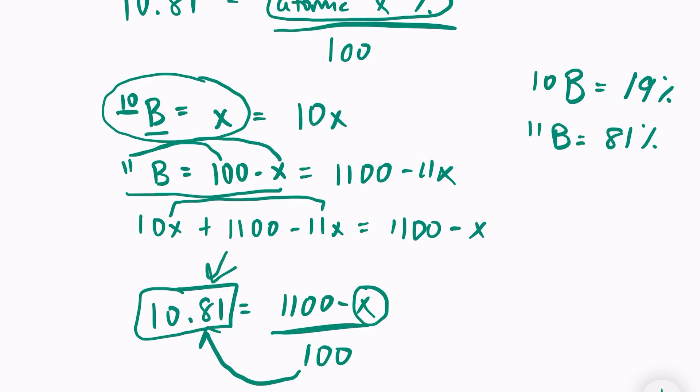But it's the weighted average of the isotopes. My weighted average is closer to 11 than it is to 10, so my percent abundance of boron-11 should be higher than boron-10. And that is true, and that's just a logic check to make sure that we're on the right track.